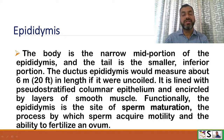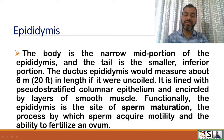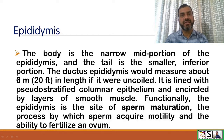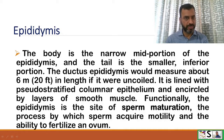The ductus epididymis would measure about 6 meters in length if uncoiled. It is lined with pseudostratified columnar epithelium and encircled by layers of smooth muscle. Functionally, the Epididymis is the site of sperm maturation — the process by which sperm acquire motility and the ability to fertilize an ovum.